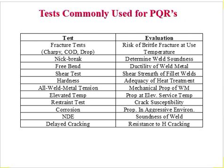The fracture test evaluates the risk of brittle fracture — whether the material can absorb impact without being brittle. The nick break test determines weld soundness and the ductility of the weld metal. The shear test measures shear strength of the fillet weld. The hardness test checks accuracy of heat treatment. The all-weld-metal tension test provides mechanical proof of the weld metal's properties. The corrosion test profiles resistance to corrosion and crack susceptibility.